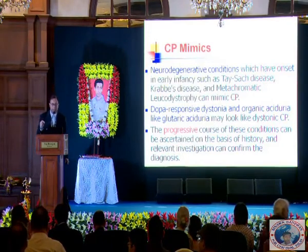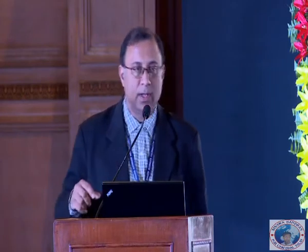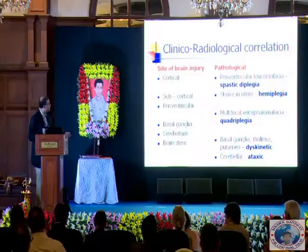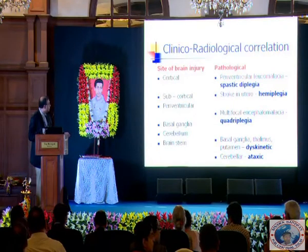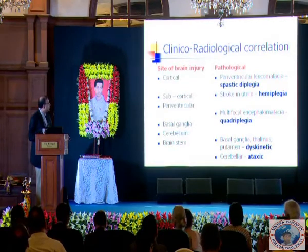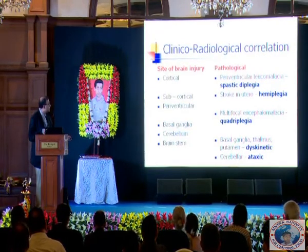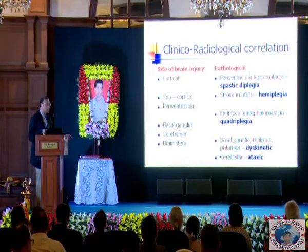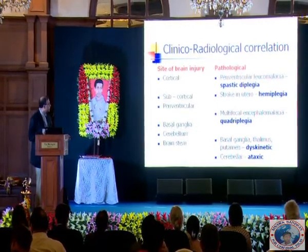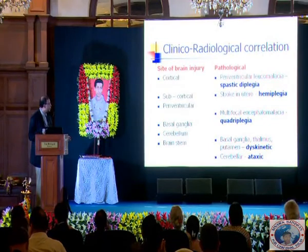The bottom line is: is it progressive? If it is progressive, it is not likely to be cerebral palsy, and we need other investigations including neuroimaging and metabolic and genetic tests. Clinical-radiological correlation is important. The site of brain injury can range from cortical to brainstem. Periventricular leukomalacia corresponds to spastic diplegia; a stroke gives hemiplegia with a visible hemispheric infarct; multifocal encephalomalacia is likely to produce a quadriplegic picture. If a child presents with a particular type of cerebral palsy, I expect certain changes in the brain, and if the two correlate, I am satisfied with the diagnosis.